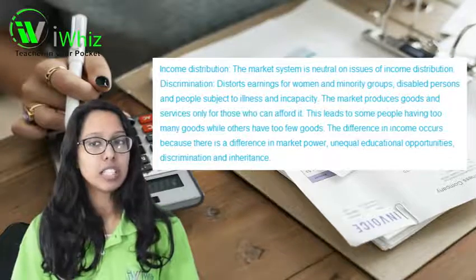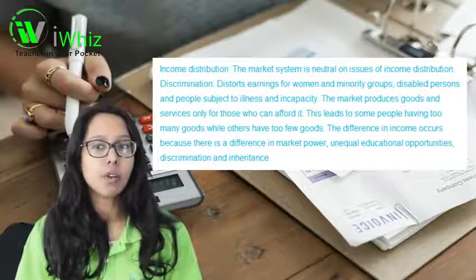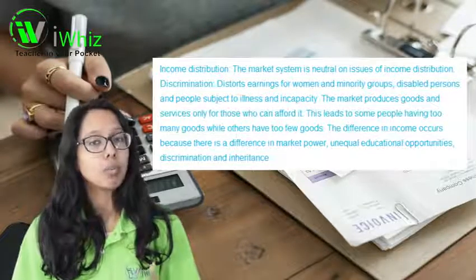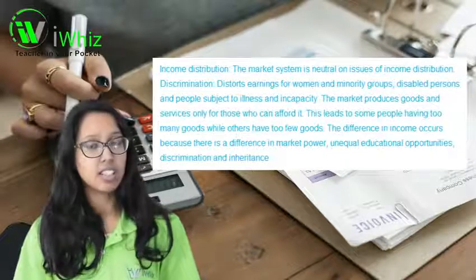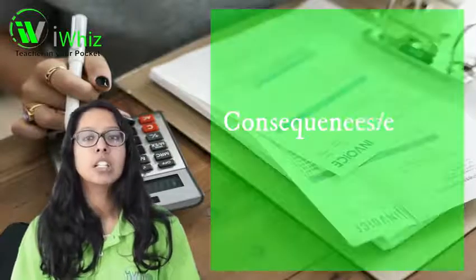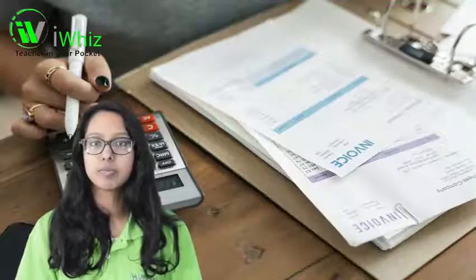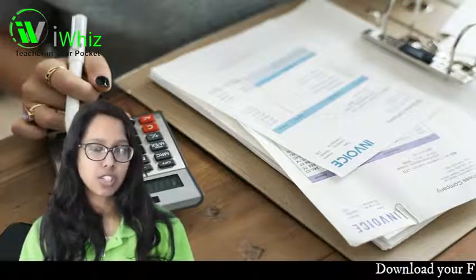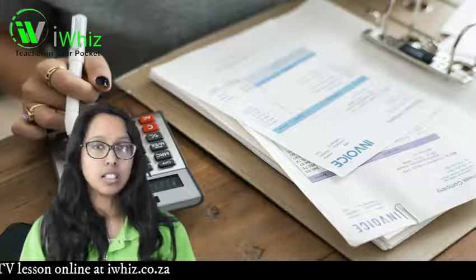The difference in income occurs because of differences in market power or unequal educational opportunities, and discrimination is also involved in inheritance itself. The consequences or effects of market failures is your next topic. There are two types of inefficiencies: productive inefficiency and technical inefficiency.